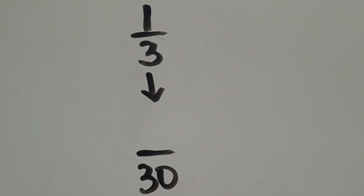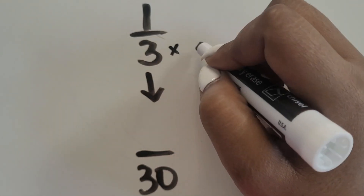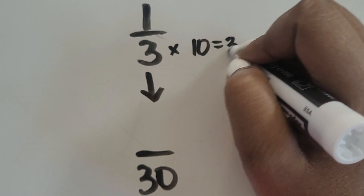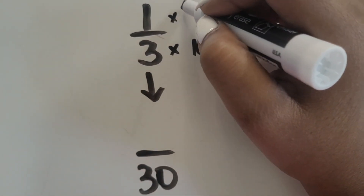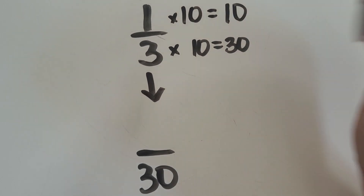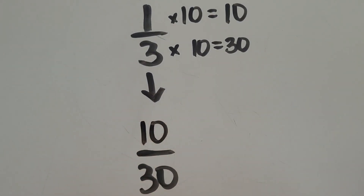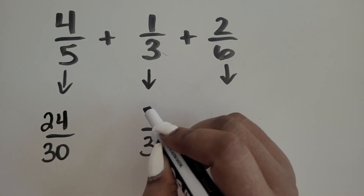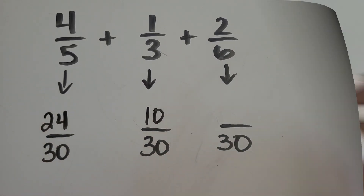Next we have 1 third. How many groups of 3 equals 30? 10. 10 groups of 3 equals 30. Let's do the same for the numerator: 10 groups of 1 equals 10, or 10 times 1 is 10. Our new equivalent fraction for 1 third is 10 thirtieths.